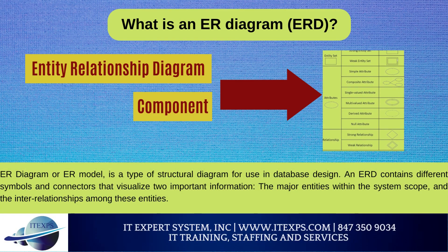What is ERD — Entity Relationship Diagram? Entity Relationship Diagram, also known as ERD, ER Diagram, or ER Model, is a type of structural diagram for use in database design. An ERD contains different symbols and connectors that visualize two important types of information: the major entities within the system scope and the inter-relationships among these entities. When we talk about entities in ERD, we are often referring to business objects such as people, roles (e.g., student), tangible business objects (e.g., product), and intangible business objects (e.g., log).